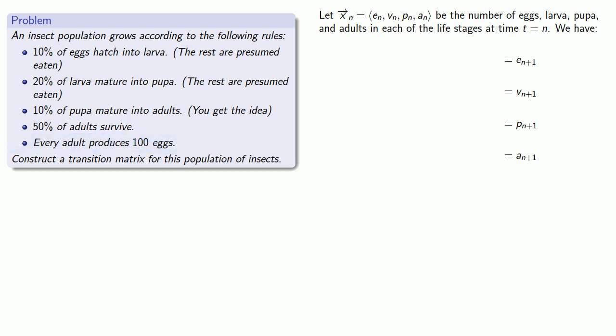So the number of eggs that we will have is 100 times the number of adults that we currently have. Since our goal is to express the transition matrix and consistency counts, we should make sure that the number of individuals in each of these life stages is included in our formula, even if the coefficient has to be zero.